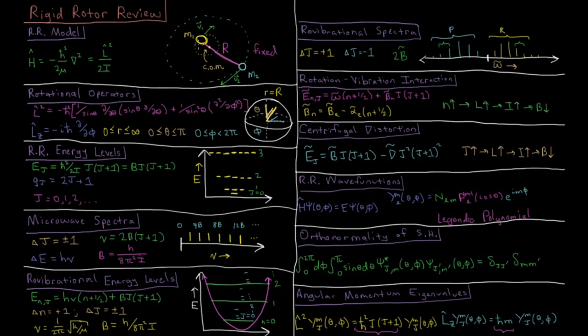The potential energy is zero beyond the fact that it is restricted to remain at this distance r, so it is free to rotate around angular space. Our Hamiltonian is just going to be its kinetic energy.